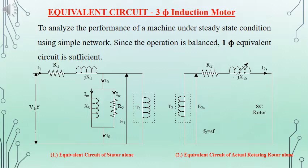For the first diagram, that is the equivalent circuit of the stator, we have R1 and X1 which are the parameters of the stator winding, and T1 is the number of turns of the stator winding. For the second diagram, R2 and X2s are the parameters of the rotor winding and T2 is the number of turns of the rotor winding. For the second diagram we have considered the short circuit condition. In the first diagram we have a parallel circuit having the parameters R0 and X0, which correspond to the no-load current I0 for the machine.